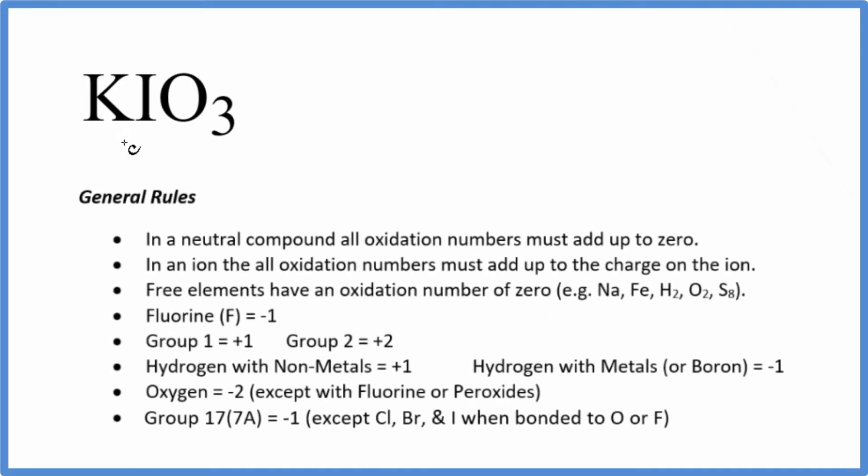In this video we'll find the oxidation numbers for each element in KIO3. This is potassium, this is the iodate ion - potassium iodate. If you look at the compound, there's no negative or positive sign after. That's because it's a neutral compound.